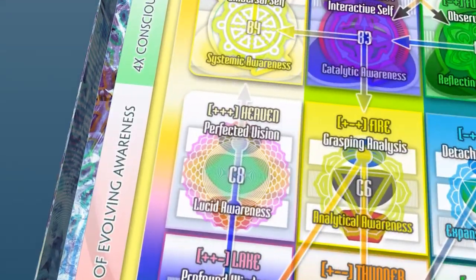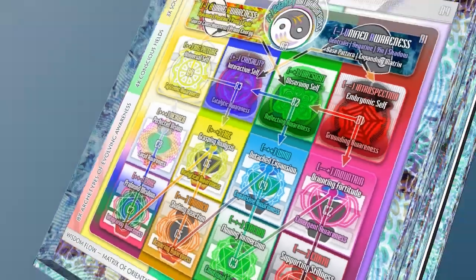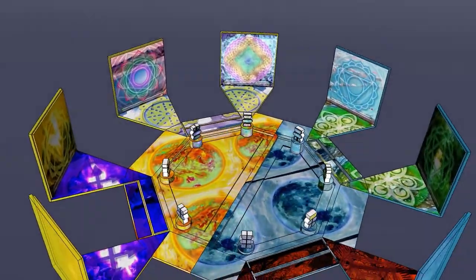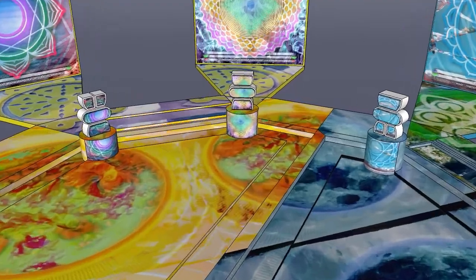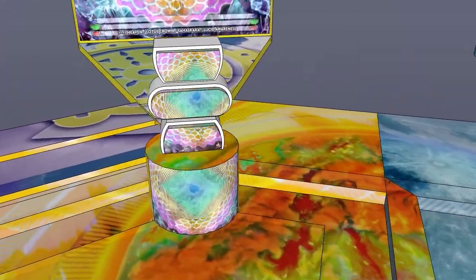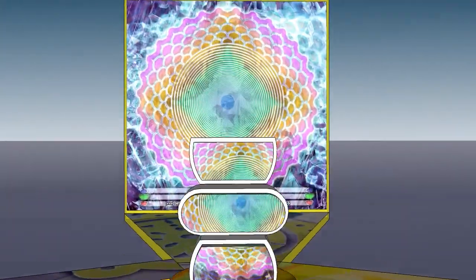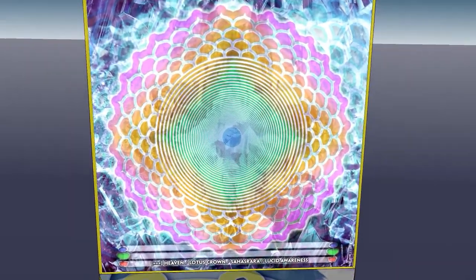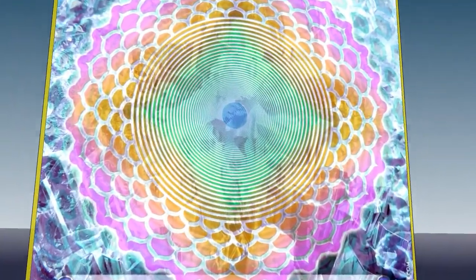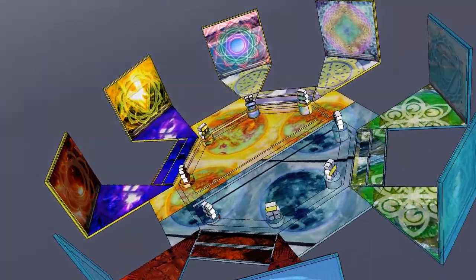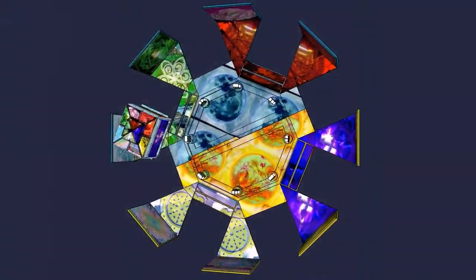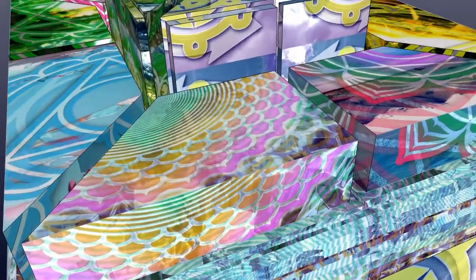Heaven: Perfected Vision, Lucid Awareness. Plus, Plus, Plus. Body Dynamic, Heart Dynamic, Intellect Dynamic. Crown Chakra: Culmination, Fulfillment, Illumination and Ascension. The full spectrum of the seventh star is accessible at the Lotus Crown. Awareness is established in the triune luminosity of Heaven.